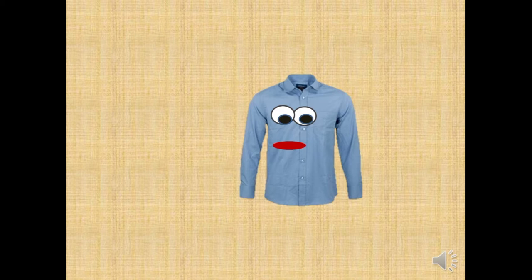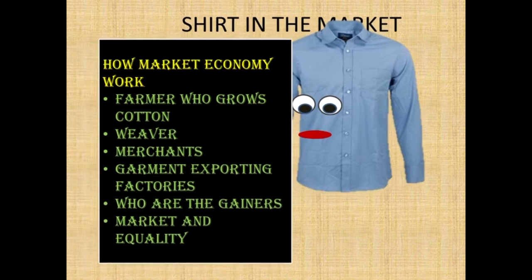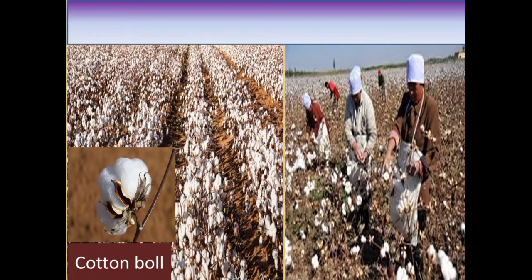Hello friends! I know I'm looking good and you all are planning to buy me, but do you know how I came here — how I was formed? So let's go on a journey. In this chapter, we will see how market economics work: the farmer who grows me, the role of the merchant, garment exporting factories — who are the real gainers — and market equality.